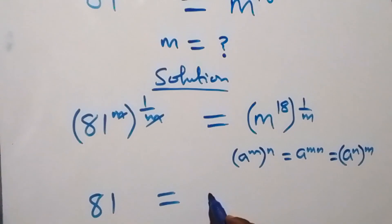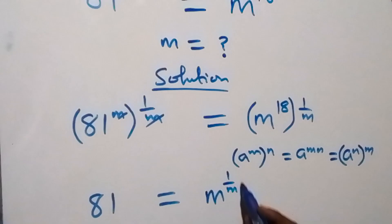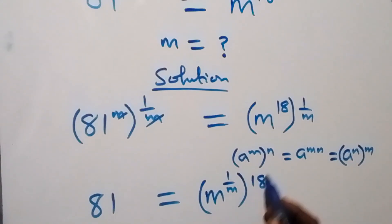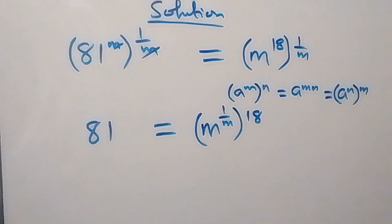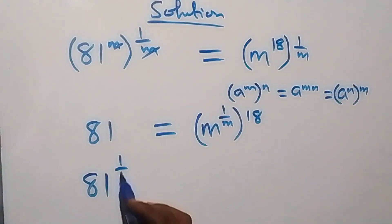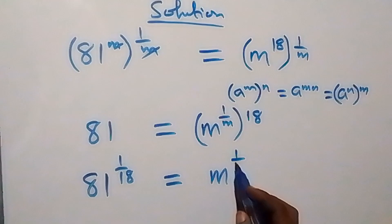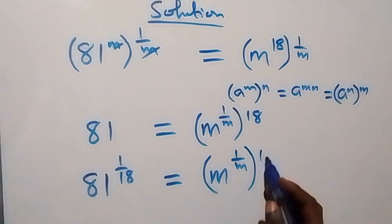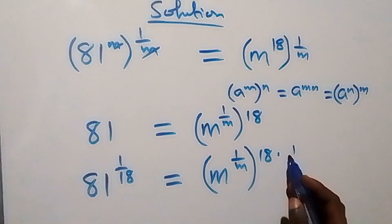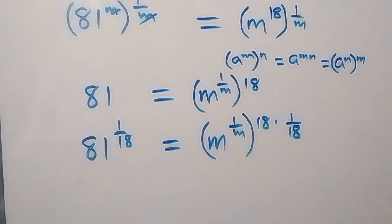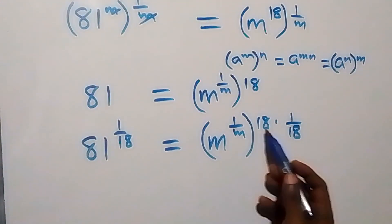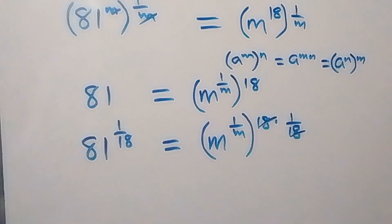We can also interchange and write this as m raised to power one over m, then raised to power 18. Next, let's raise both sides to power one over 18. So we have 81 raised to power one over 18, equals m raised to power one over m, raised to power 18, then also raised to power one over 18. Applying the law of indices, the powers multiply and 18 cancels.